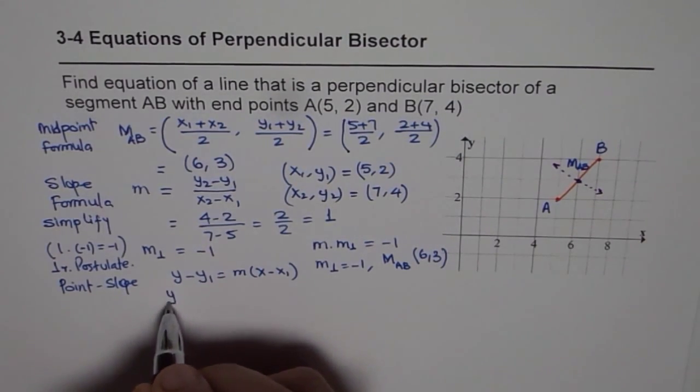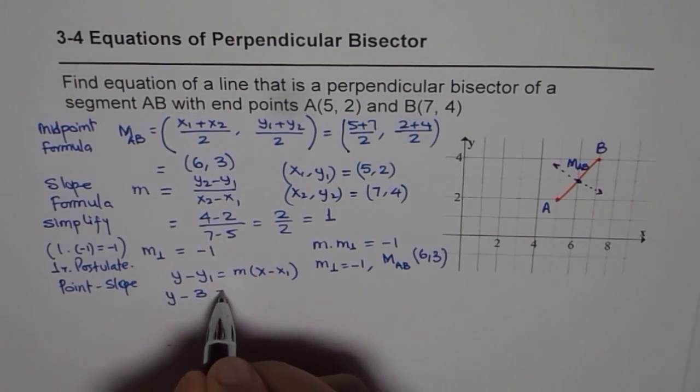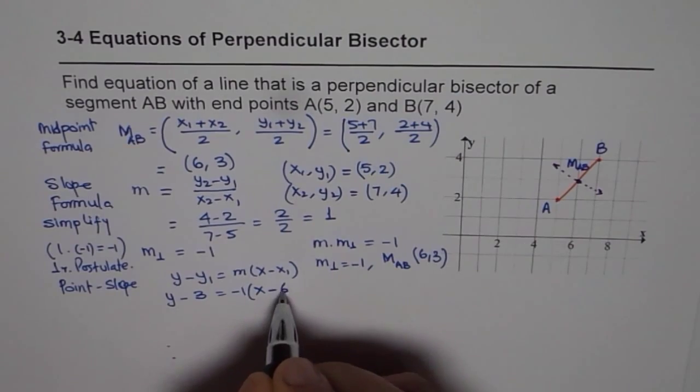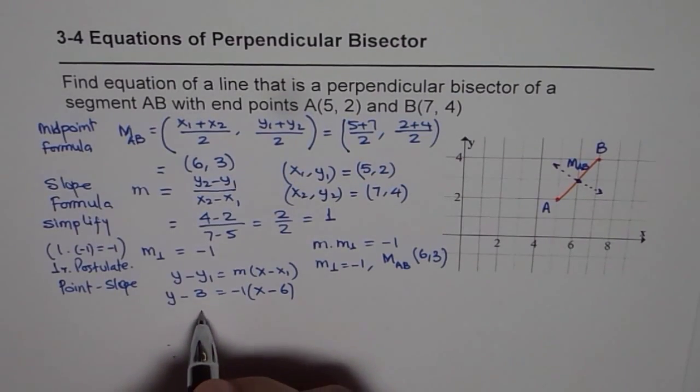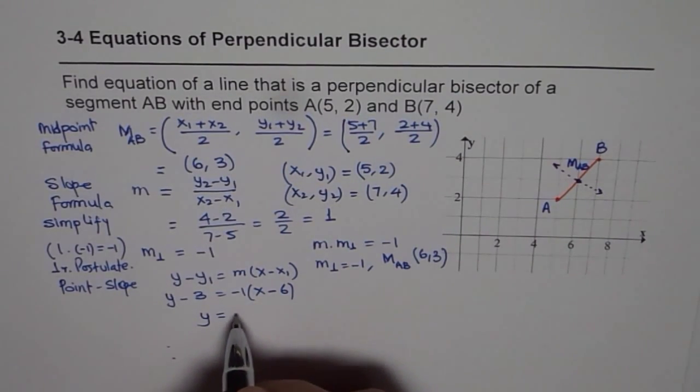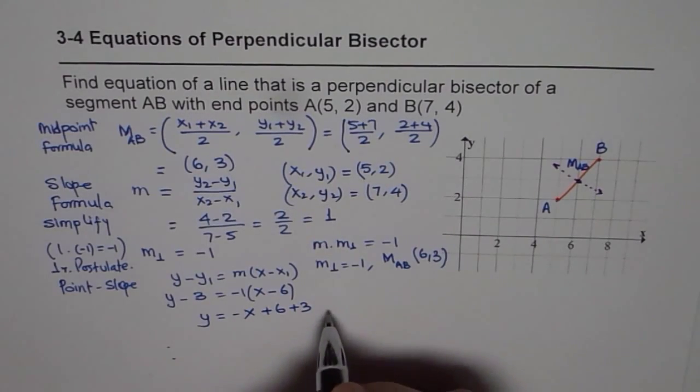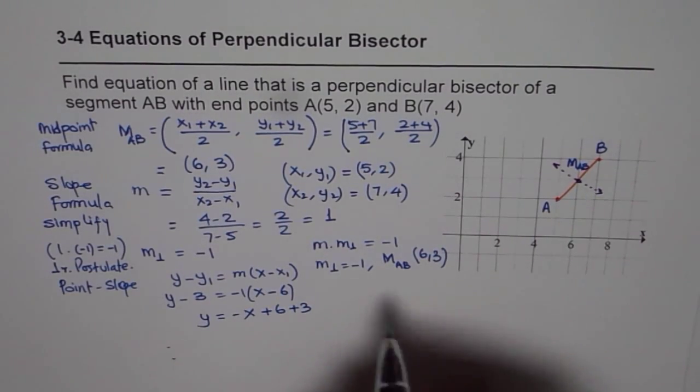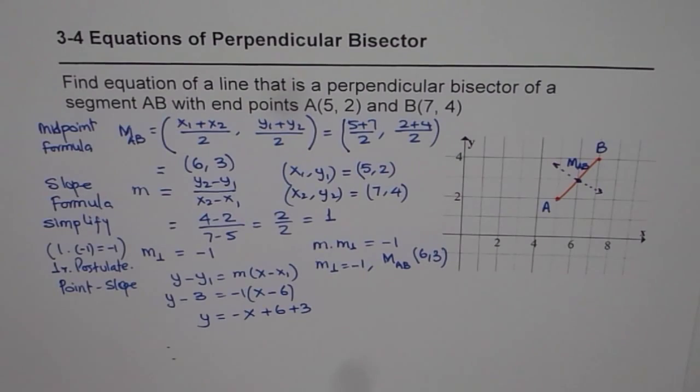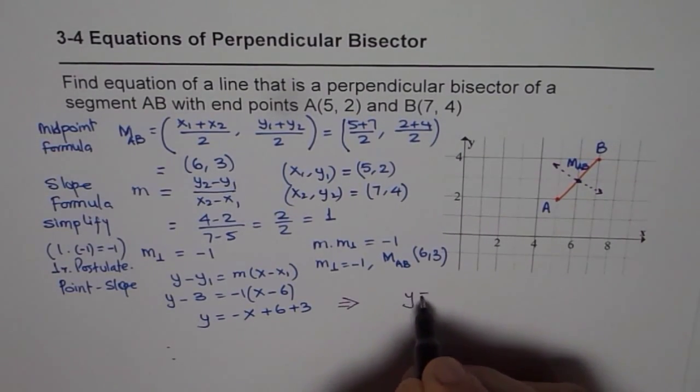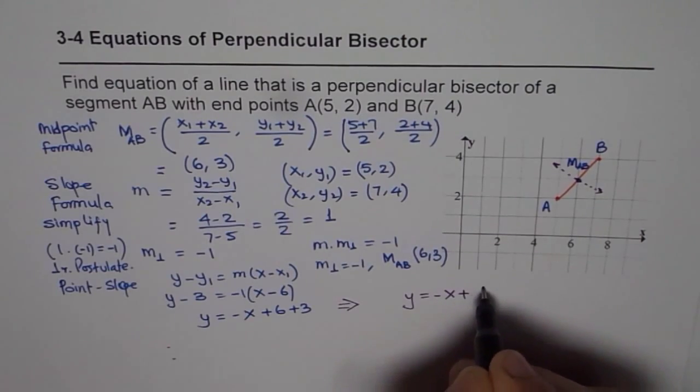So we get y - 3 = -1(x - 6). That gives us y = -x + 6 + 3. Simplifying, we get our final answer: y = -x + 9.